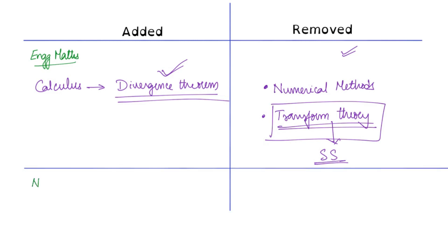Next, we will discuss the syllabus change of networks. In networks, there are no new topics added. Two topics have been removed: the first is graph theory, which has been entirely removed from the syllabus, and the second topic that has been removed is filters. Both graph theory and filters are removed from networks.